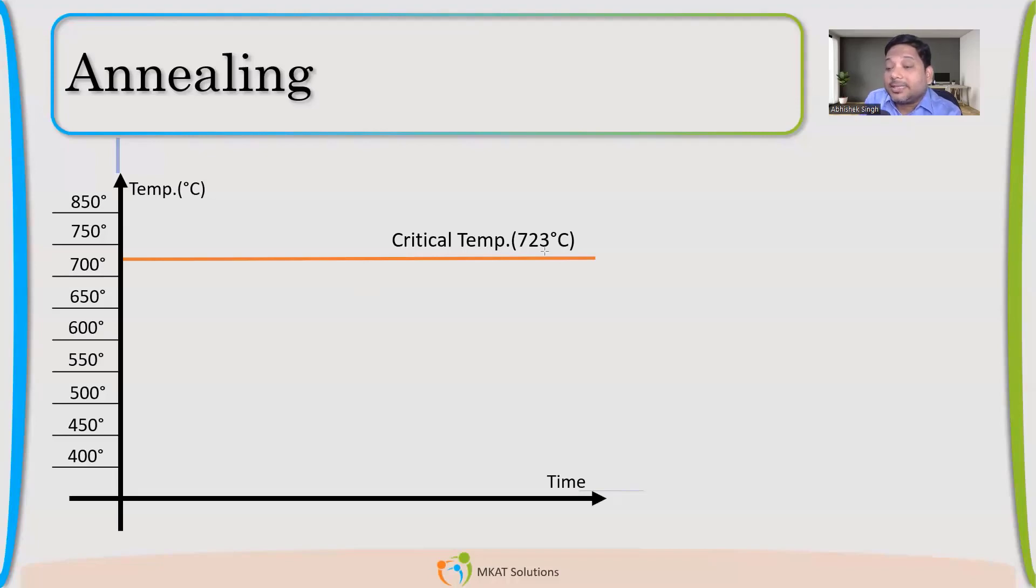But these carbon steels not having any other alloying element. If you add, it may alter. But don't be worried about that. Just there is a critical temperature. And what exactly is the critical temperature? But before that, let us understand this.